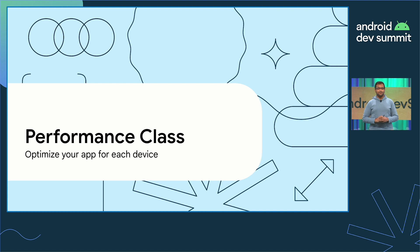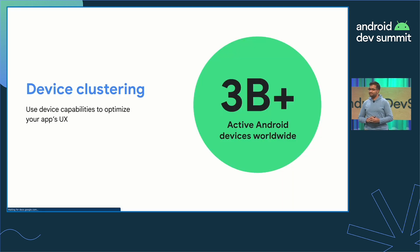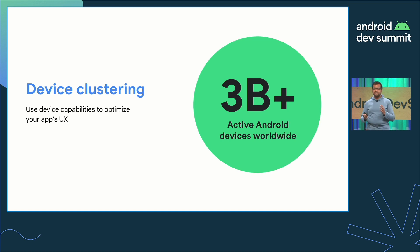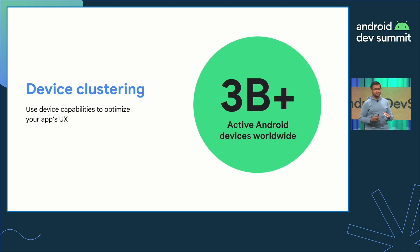Next, I'd like to talk about Performance Class, a tool that you can use to make sure you're presenting the best experience to each user on a device-by-device basis. There are billions of Android devices out in the wild, with varying hardware specs, capabilities, and software implementations. Rather than scaling down app experiences for the whole ecosystem to accommodate lower-end devices, one option is to define groups of devices that perform similarly. For example, you could specify that your app does full-resolution playback on high-performing devices, but reduce the resolution on lower-performing devices to make sure that the playback stays smooth.